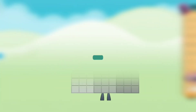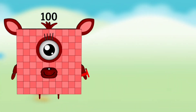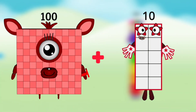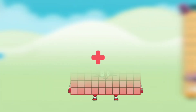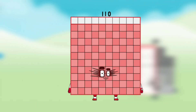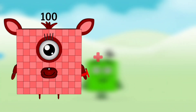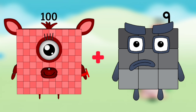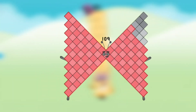Number Blocks 100 minus Number Blocks 10 equals Number Blocks 90. Number Blocks 100 plus Number Blocks 10 equals Number Blocks 110. Number Blocks 100 plus Number Blocks 9 equals Number Blocks 109.